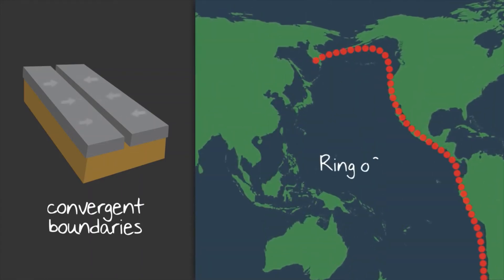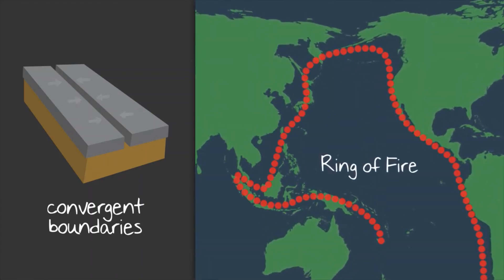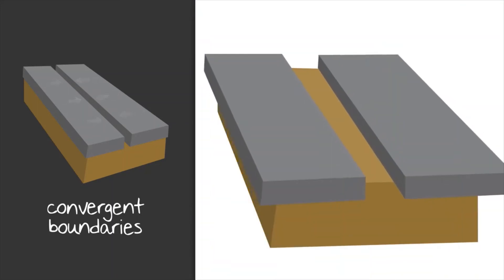An example of this is the Ring of Fire, which is an active ring of volcanoes that encircles the Pacific Ocean.